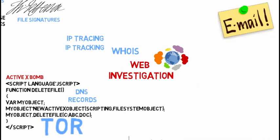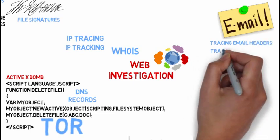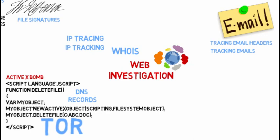When investigating emails, there are two basic things to do: tracing email headers and tracking emails. Tracing email headers involves analyzing the header that comes with every email to find the IP address from which the email originated. However, many email service providers, especially Gmail, don't show the IP address of the originator anymore — it's more or less an internal IP on the 10.10 network.